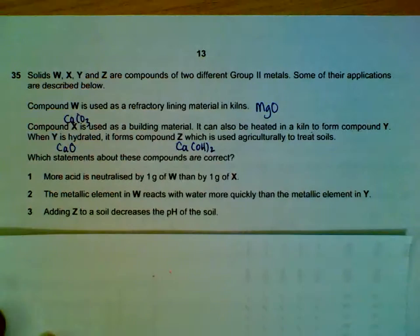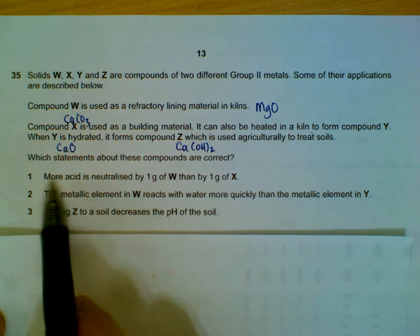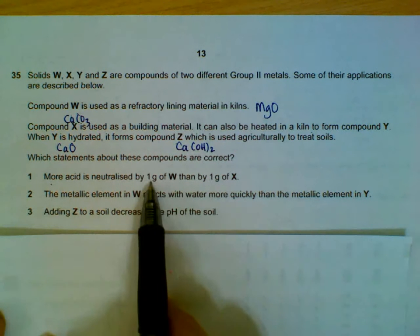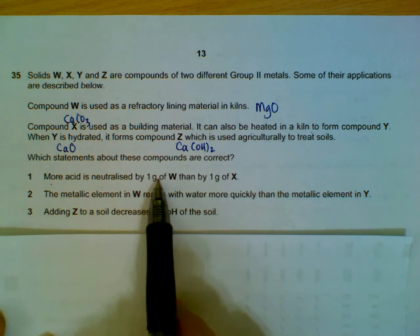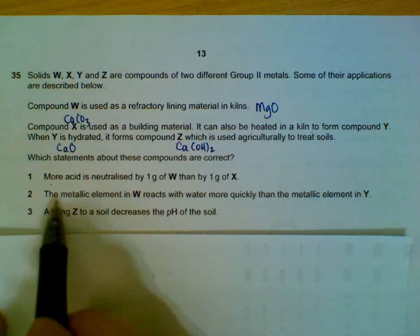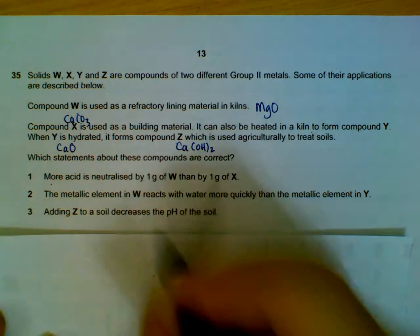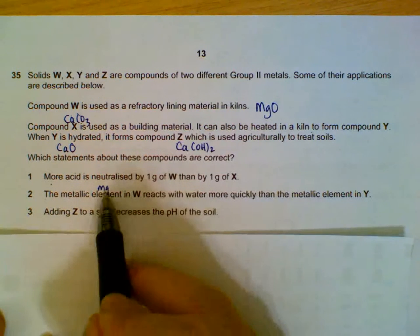Statement 1: more acid is neutralized by one gram of W than one gram of X. Sometimes when calculations are troublesome, we look at the other statements first to see whether we need to actually calculate it out.